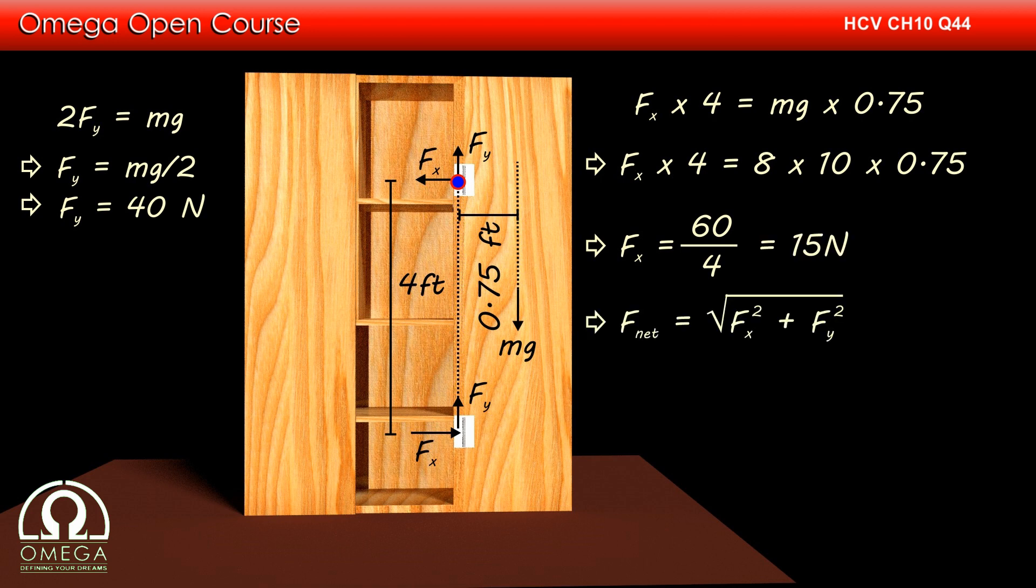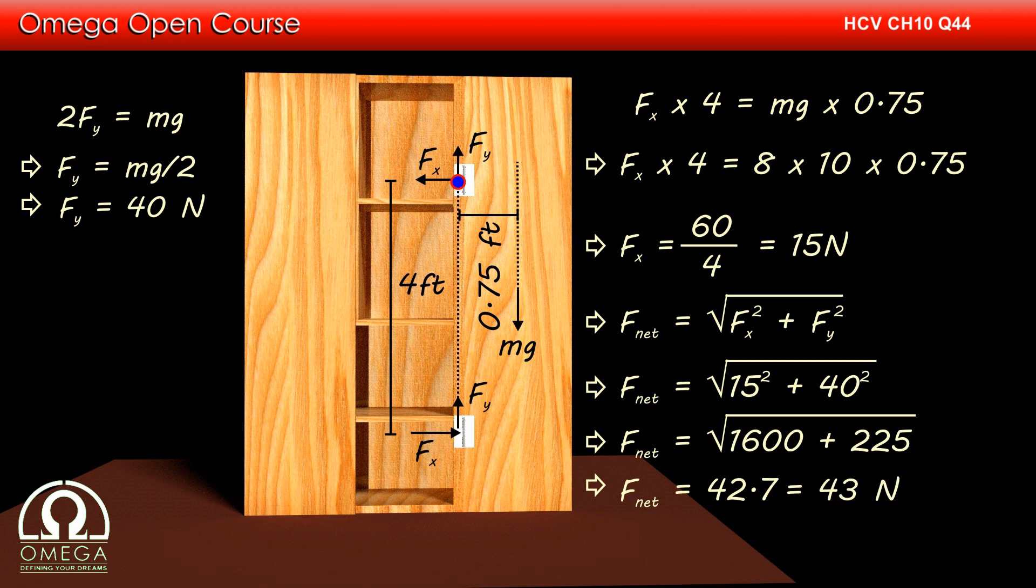Now net force at each of the hinges is resultant of these two forces, i.e. √(Fx² + Fy²). Putting the values, we get √(1600 + 225) = 42.7 N, which when rounded to two significant figures becomes 43 N. This is our answer.